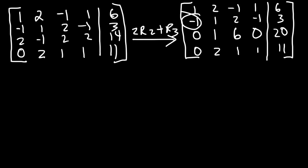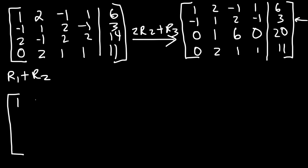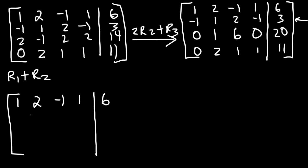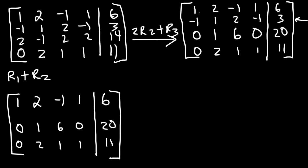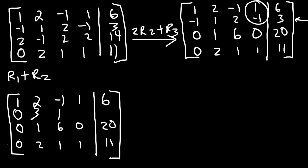Now we need to make the leading entry of row 2 a zero. The operation is R1 plus R2 applied to the second row. The first row stays the same. Adding row 1 and row 2: 1 plus negative 1 is 0, 2 plus 1 is 3, negative 1 plus 2 is 1, 1 plus negative 1 is 0, and 6 plus 3 is 9.